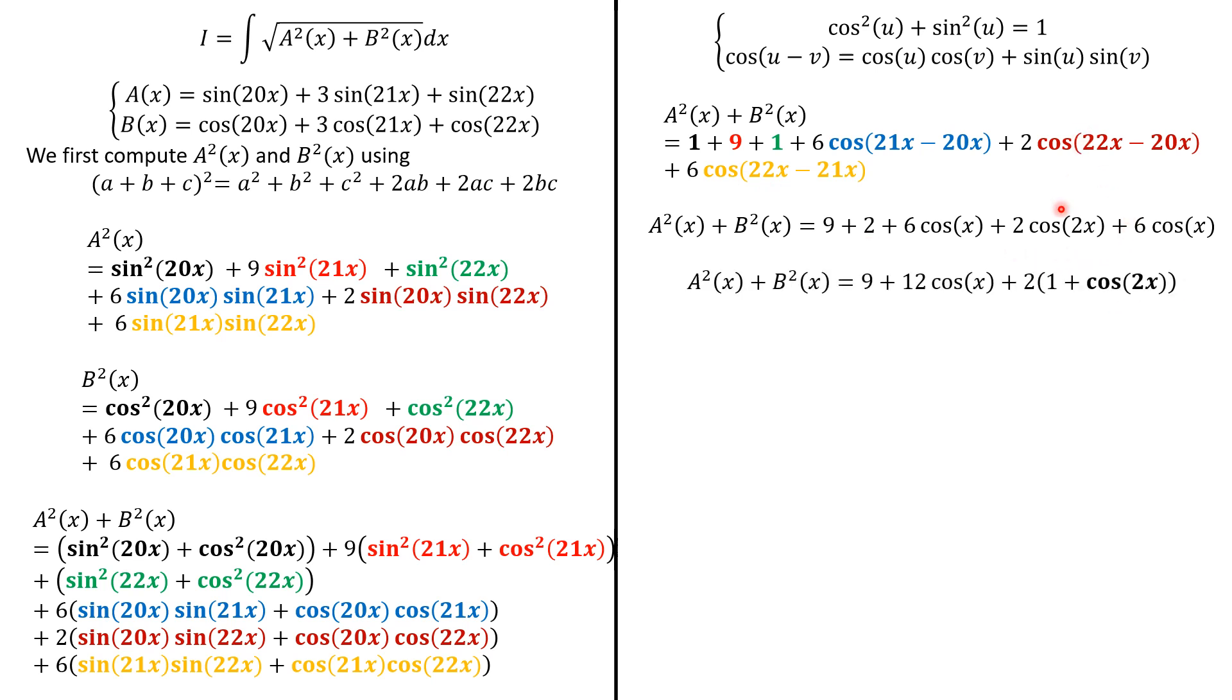Now, we group, we have 9, and 6 plus 6cos(x) is 12cos(x). Now, we leave this as follows. So, we have 2(1 + cos(2x)). Next, we apply a duplication formula because cos(2x) is 2cos²(x) - 1. To have this. And next, this is going to be 4cos²(x).